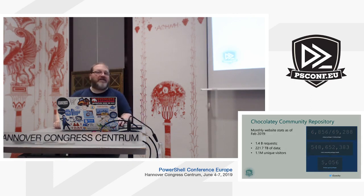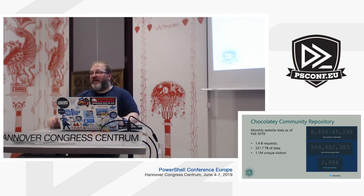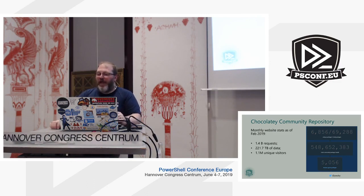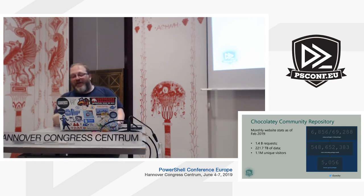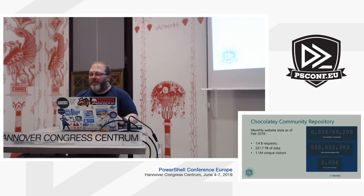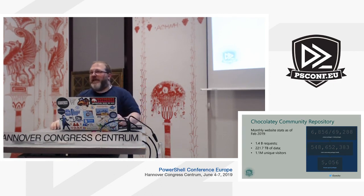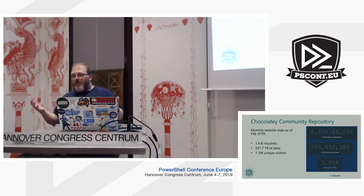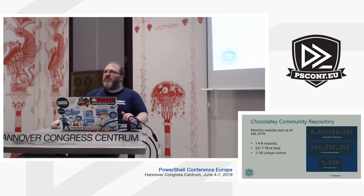The Chocolatey Community Repository currently has nearly 6,900 packages with nearly 70,000 versions of those packages in total. There have been 548 million installs of Chocolatey packages since the website appeared, and there are 5,056 known good packages. That number is different from the 6,856 unique packages because some packages were submitted before moderation existed, haven't been updated since, and might not work or may be out of date. But any of you can pick those packages up, let us know you want to maintain them, and work with them.